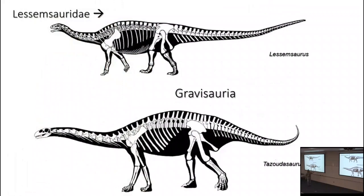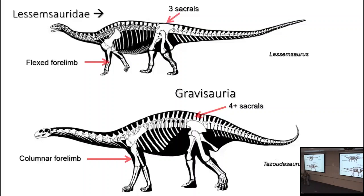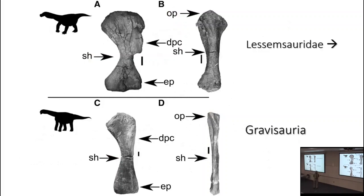From a Triassic sauropod like Lessemsaurus to a Gravisaurian, we go from flexed forelimbs to more columnar forelimbs. Also, Lessemsaurids and earlier sauropods had only three sacrals — the standard for dinosaurs — but we start adding more sacral vertebrae. As we get even bigger animals, more connections between the vertebrae and pelvis help with weight support. The humerus changes from having lots of muscle attachment points to being much reduced — essentially just a column.